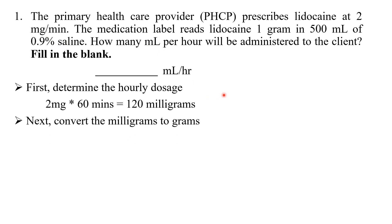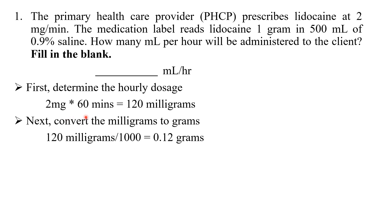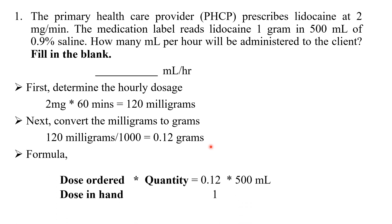Next, convert milligrams to grams, since the label uses grams. Divide 120 mg by 1000 to get 0.12 grams. So our new dose ordered is 0.12 grams. Now apply the formula: dose ordered divided by dose in hand, multiplied by quantity. Dose ordered is 0.12 g, dose in hand is 1 gram, and volume is 500 mL.